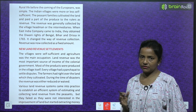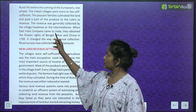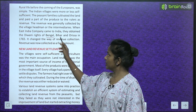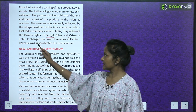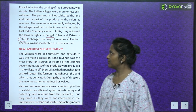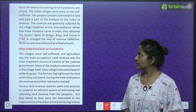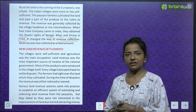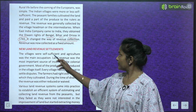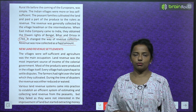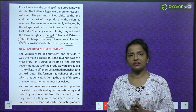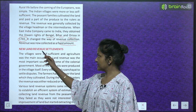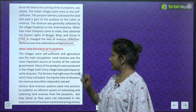When the East India Company came to India, they obtained the Diwani rights of Bengal, Bihar, and Orissa in 1765. This changed the way revenue was collected. Revenue was now collected as a fixed amount — a set sum that had to be paid regardless of circumstances.